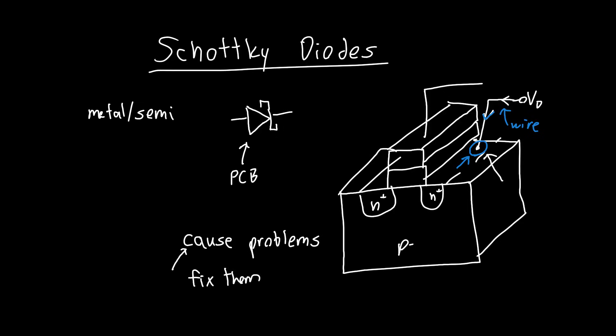And sometimes we don't want to fix them — sometimes we want to use them to create interesting devices like a Schottky diode. So the next few videos are going to be about this topic in general: metal-semiconductor junctions.